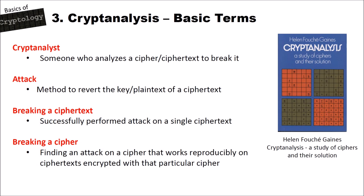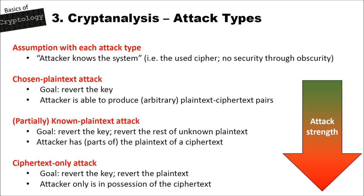Next we want to talk about attack types. We have three different attack types. Before we speak about them, we have to make an assumption that applies to each: the attacker knows the system — meaning the attacker knows the cipher used to encrypt a given ciphertext. This is the principle of no security through obscurity. A crypto system must be secure even if an attacker knows everything about it except the key. The arrow on the right goes from green to red — the deeper we go, the more powerful the attack and the less the attacker knows.